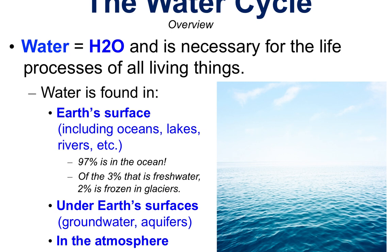90% of all the water on the planet is contained within the ocean. What's available for us to use is only 3% as fresh water. And of that 3%, two-thirds of it — 2% of all the water on the planet — is still frozen in glaciers. So living things can only use and have available to them 1% of fresh water.